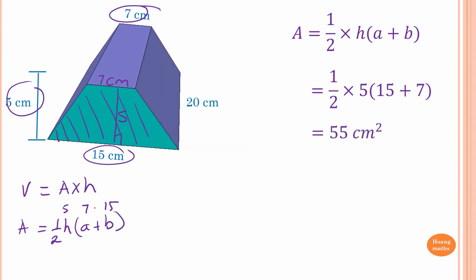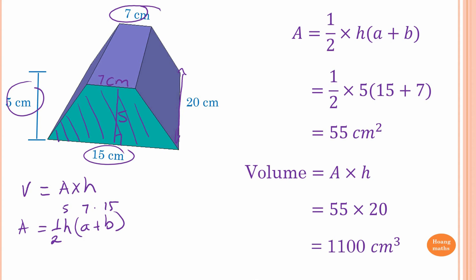So the area of this trapezium is 55 square centimeters. The volume of the prism is area times height, which is 55 times 20, because 20 is the perpendicular height of this solid. The answer is 1,100 centimeters cubed. Please do not forget the units — area is in square units, and volume is in cubic units.